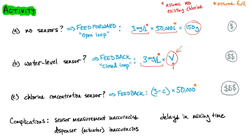The third option is a chlorine concentration sensor. Now we don't have a water level sensor, so we have to assume how much water is in the pool. We take the difference between where we want to be — three milligrams per liter — and where we are now. C is the sensor measurement from the chlorine concentration sensor, so three minus C is the difference. This is another example of feedback: we take the sensor output — the chlorine concentration reading — and feed it back by multiplying by 50,000 and doing the subtraction to inform the input.